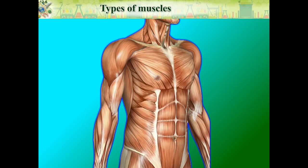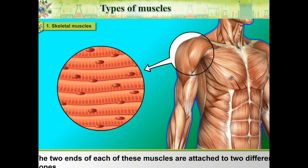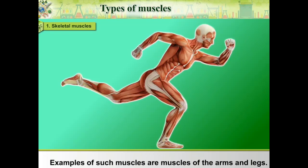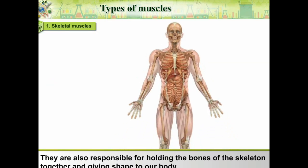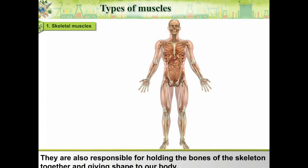Types of Muscles. Skeletal Muscles: The two ends of each of these muscles are attached to two different bones. Examples of such muscles are muscles of the arms and legs. Their movements are voluntary. They are also responsible for holding the bones of the skeleton together and giving shape to our body.